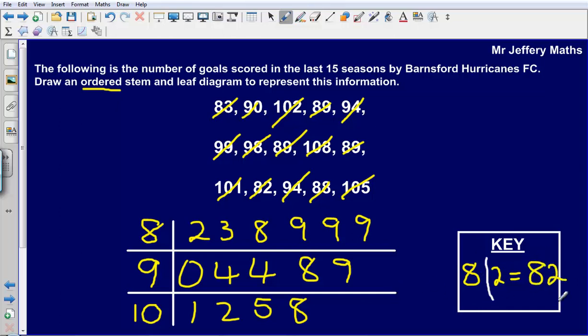You can choose any number for the key, I just usually tend to choose the first number that we have got. So an 8, then this line here that we have drawn, then a 2 after that line represents the number 82.